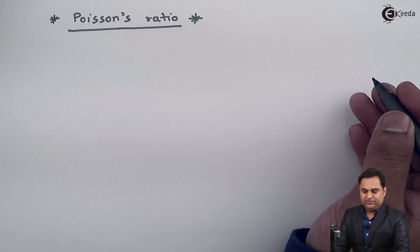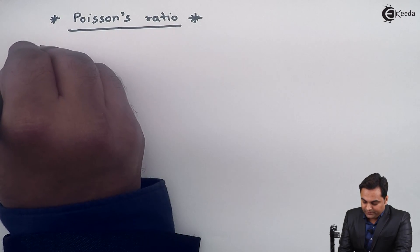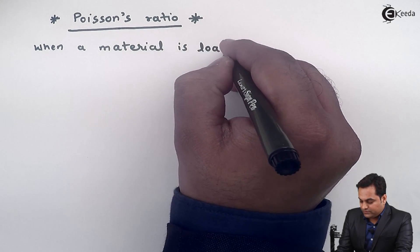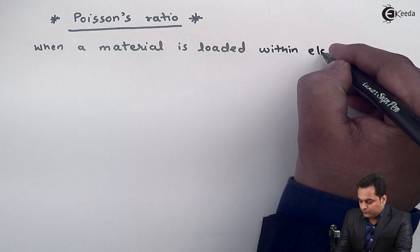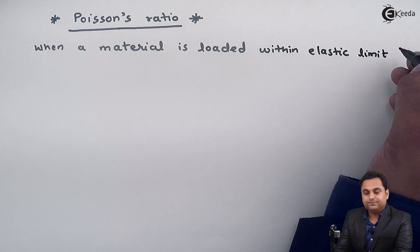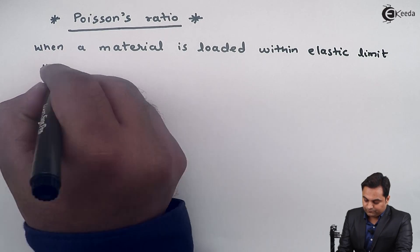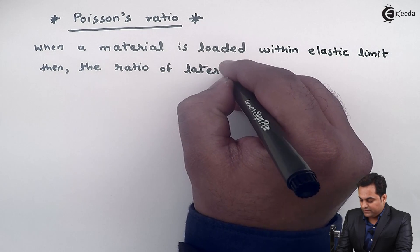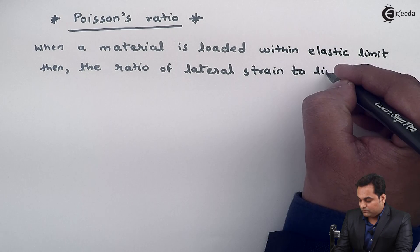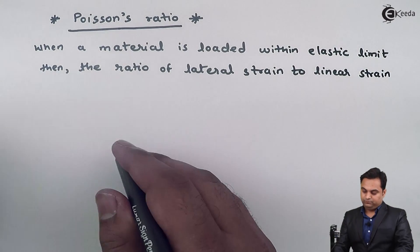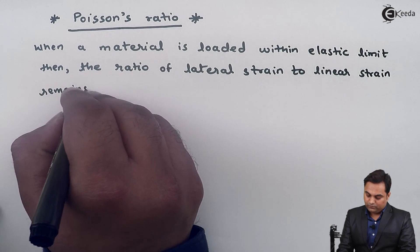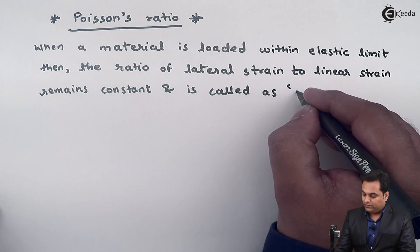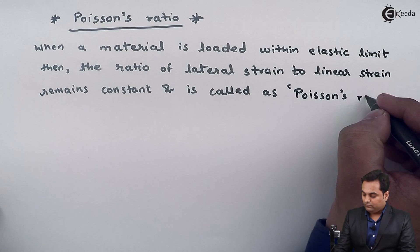Poisson's ratio — first I'll write the definition: when a material is loaded within elastic limit, then the ratio of lateral strain to linear strain remains constant, and is called as Poisson's ratio.